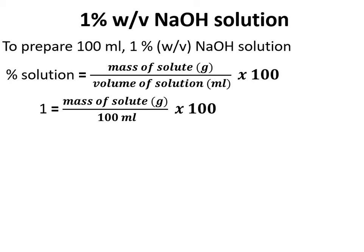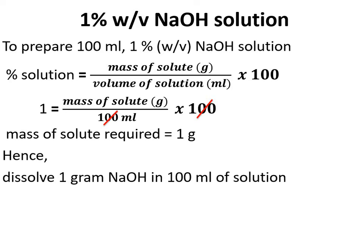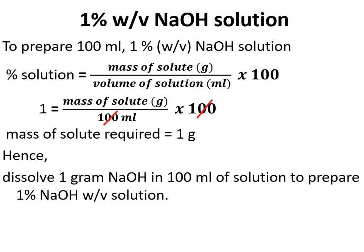You can change the volume of solution as per your requirement. After calculation, 100 is cancelled by 100, and we get the mass of solute required equals 1 gram. Hence, dissolve 1 gram of sodium hydroxide in 100 mL of solution to prepare 1% NaOH weight by volume solution. Volume of solution here means the total volume of the solution.